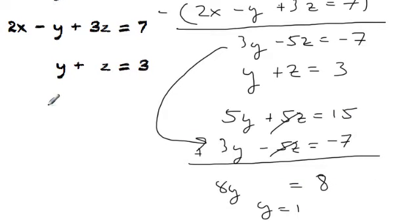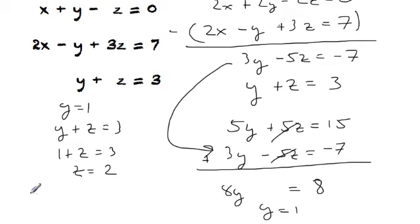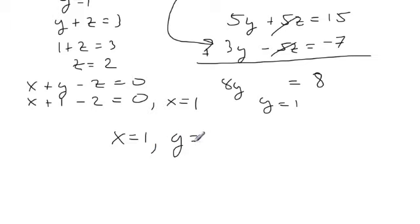So once we know y equals one, then we know that y plus z equals three. So that means that one plus z equals three or that z equals two. And then once we know that, we know that x plus y minus z equals zero. So we know that x plus one minus two equals zero, which means that x equals one. So if I summarize my results, x equals one, y equals one, and z equals two.